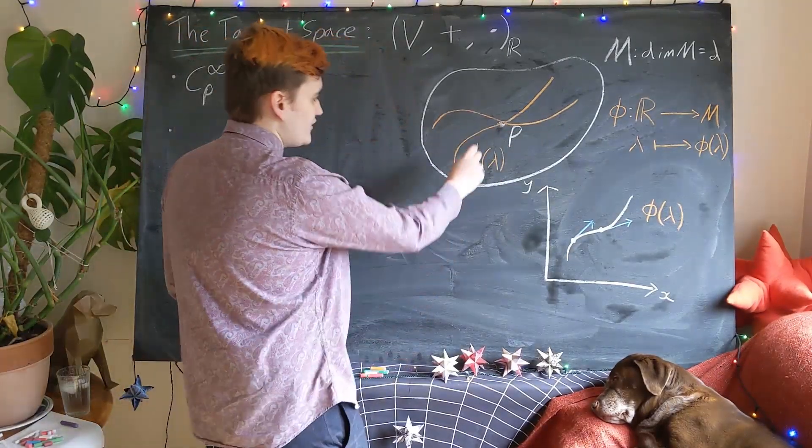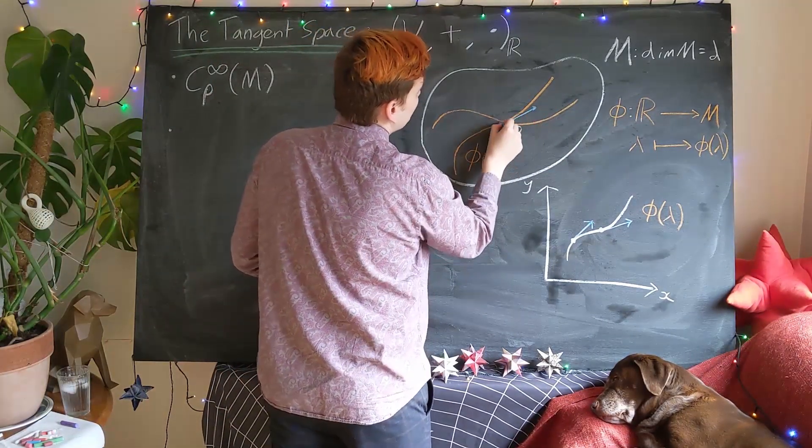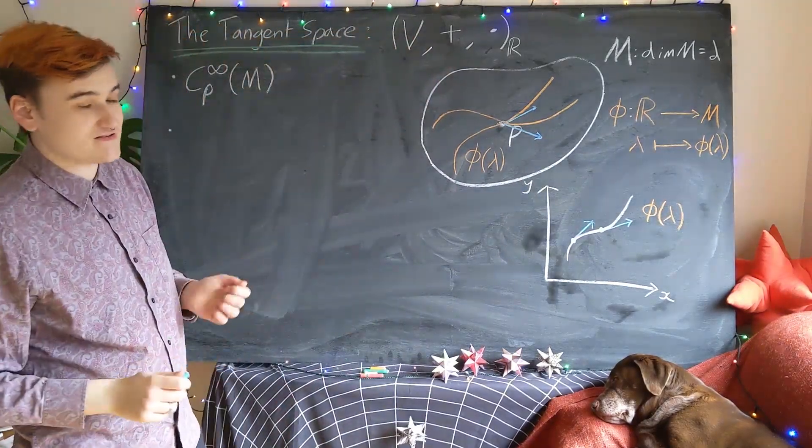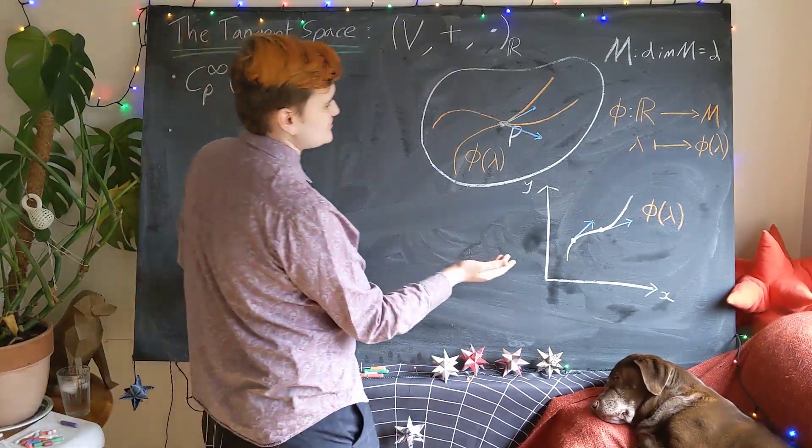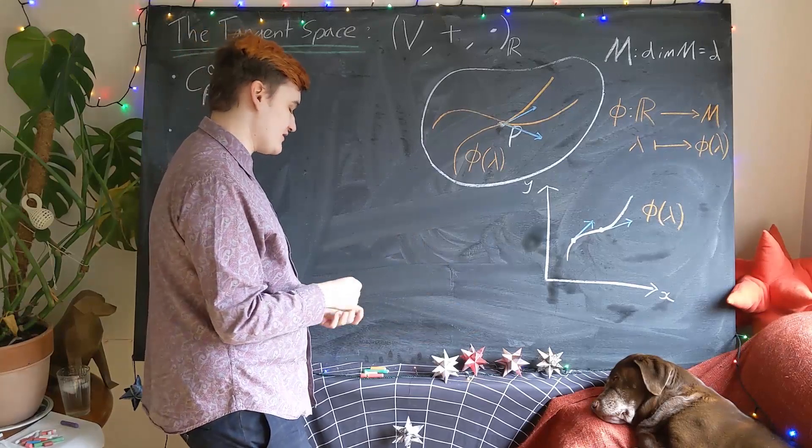To produce the tangent vectors at this point, we simply need to take the derivative of all of the smooth curves. So each one of these smooth curves passing through the point is going to have some particular derivative vector, or tangent vector now, that points in some direction.